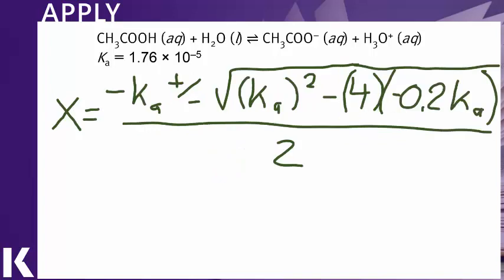Negative b plus or minus the square root of b squared minus 4ac all over 2a. When we do that, the quadratic formula looks like this. Simply substituting a, b, and c into the quadratic formula.